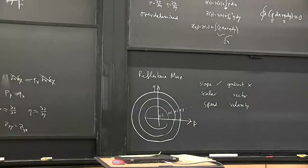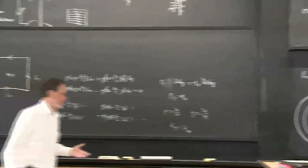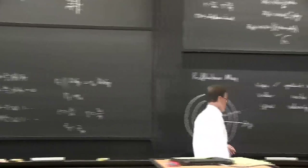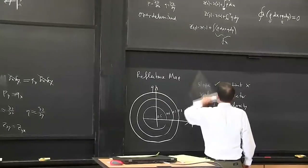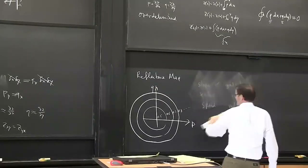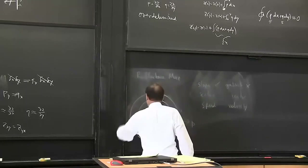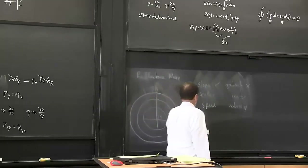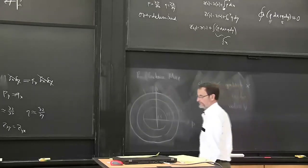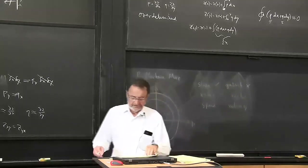This is like over-determined linear equations - there's no solution. All we can do is find some least-squares approximation. There is no surface Z(x,y) that will give us exactly the P and Q that we measured from photometric stereo or some other vision method.